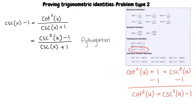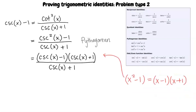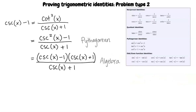Now that we have done this, we have a difference of squares as the numerator. We can factor cosecant squared of x minus 1 to cosecant of x minus 1 times cosecant of x plus 1, in the same way that we can factor x squared minus 1 to be x minus 1 times x plus 1. This step is algebra, so in our proof we will write algebra.